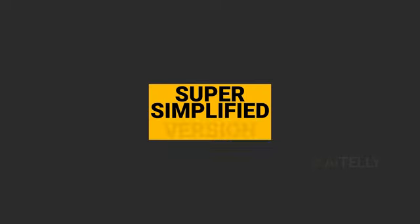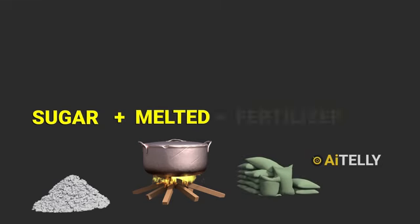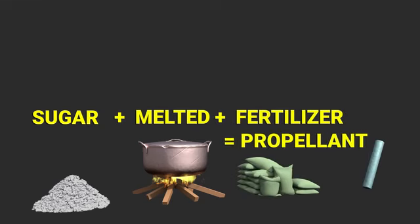Here is a super simplified version. Your first ingredient is sugar. Then melt it with the oxidizing agent, fertilizer, and mixed together to form a slug, which is used as a propellant to power the rocket.